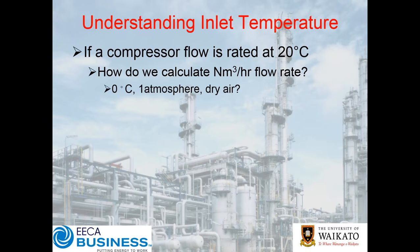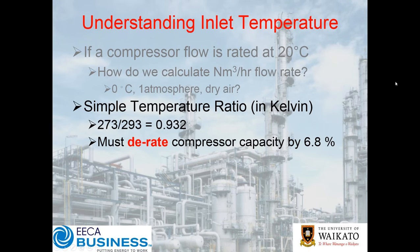If a compressor flow is rated at 20 degrees Celsius, how do we calculate the normal cubic metres per hour flow rate? Remembering that at normal conditions we're at 0 degrees, 1 atmosphere, dry air. We use a simple temperature ratio in Kelvin: 0°C is 273 K and 20°C is 293 K. The ratio is 0.932, meaning we have to de-rate our compressor by 6.8% to get our normal cubic metres per hour. So if the compressor was specified at 20°C but you've been given a normal flow rate specification, you run the risk of being 7% undersized if you're right on the limit.